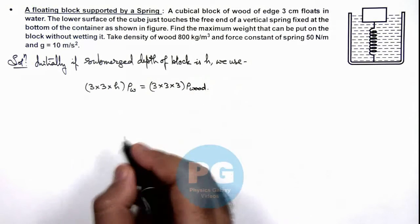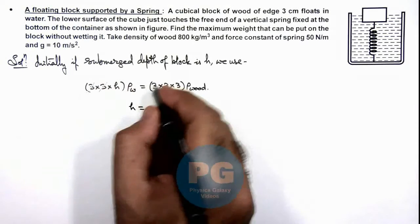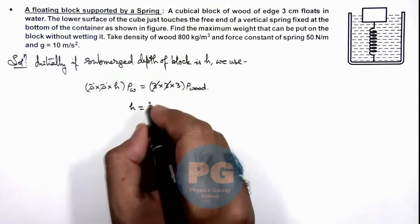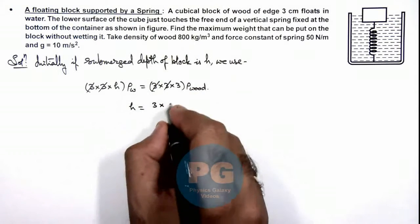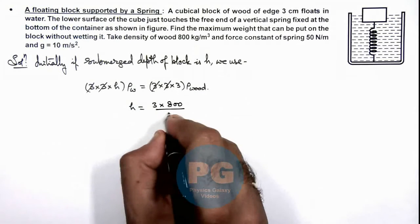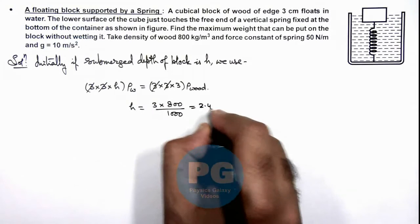So in this equation here we'll get the value of h, that is equal to 3 times 3 gets cancelled out. This will be 3 multiplied by density of wood is 800 divided by density of water is 1000, so this will be 2.4 centimeter.